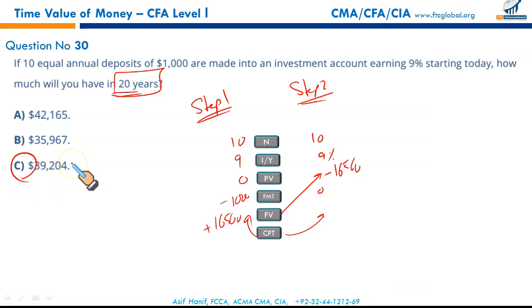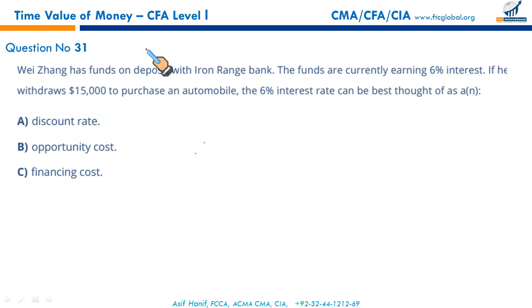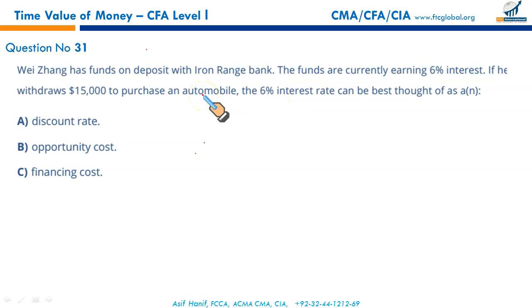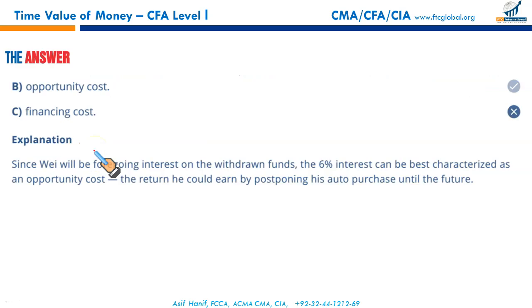Question 31: Weizhang has funds earning 6% interest. If he withdraws $15,000 to purchase an automobile, the 6% interest he sacrifices can best be thought of as an opportunity cost — a sacrifice made in order to purchase the automobile. That makes B the correct option.